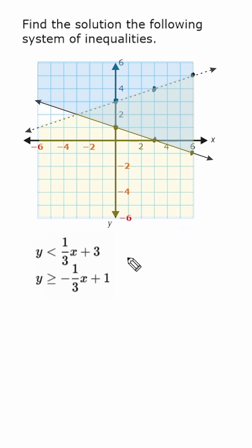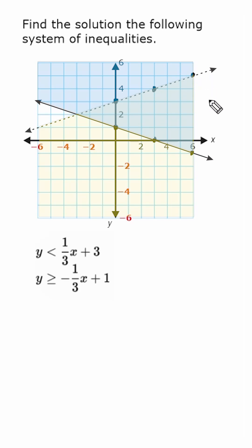We can use any points directly on the solid line next to the shaded region because of the equal to sign. However, we cannot use any points on the dotted line. So any point located in this green shaded region, or directly on the solid line that borders the green region, will satisfy our system of inequalities.